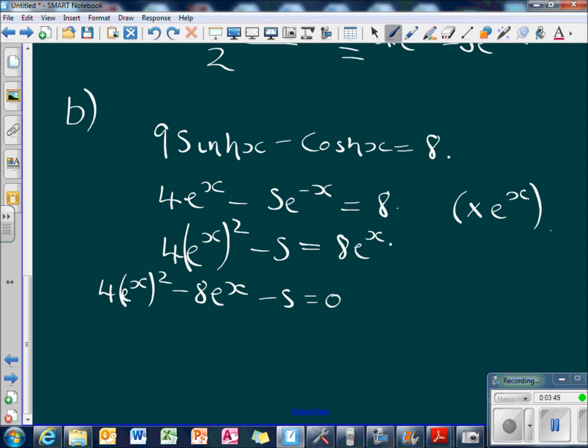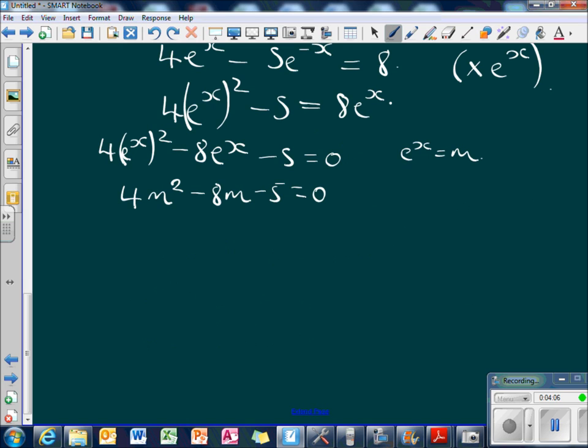Now then you can treat e to the x as just, let's say m. So you would get 4 m squared minus 8 m minus 5 equals 0. Then work it out using the quadratic formula or in your head. You should get m equal negative half and m equals 5 over 2. But obviously m is e to the x, so e to the x equals negative half and e to the x equals 5 over 2.